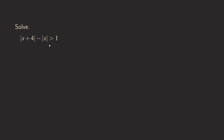The first thing that we're going to do to solve this inequality is to get the absolute value of x on the right side. So what we are going to do is to add absolute value of x to both sides of the inequality. So we are going to get absolute value of x plus 4 on the left side, and then we have greater than, then 1, then plus absolute value of x on the right side.